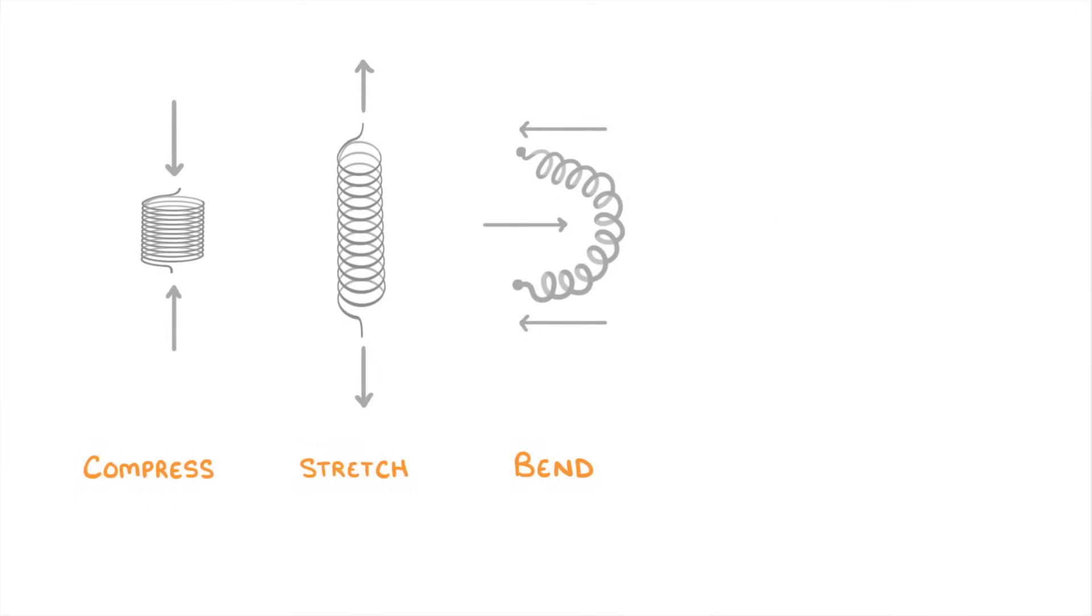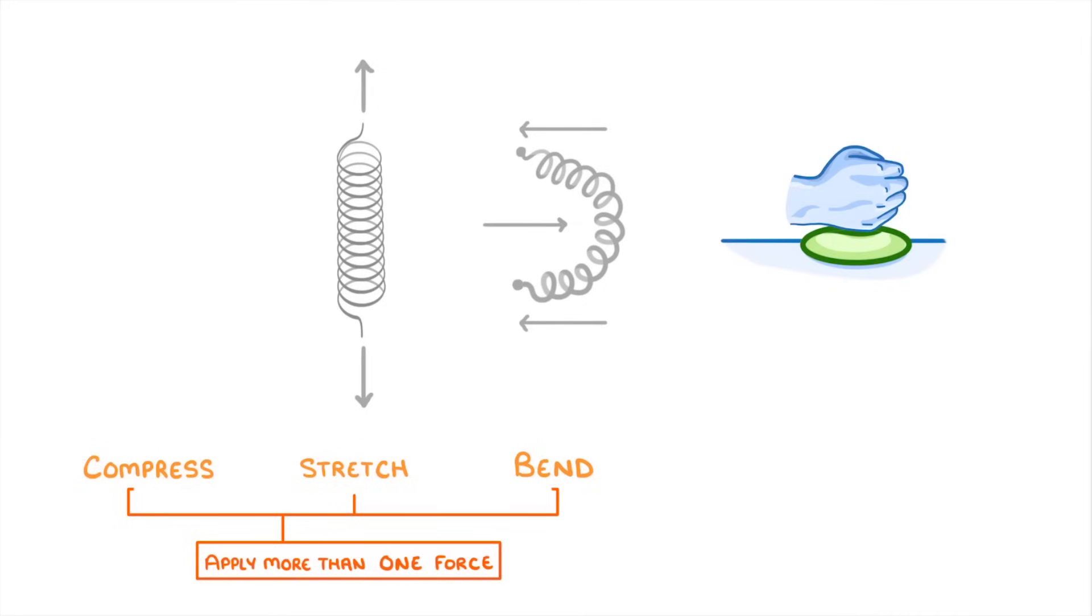Whatever the object is though, we always have to apply more than one force if we want it to stay still. Otherwise, the object will just move as we pull or push it. Even if you squish something against a floor, and so you only apply one force, the floor itself is applying a force upwards, so there are still two forces acting on the object.